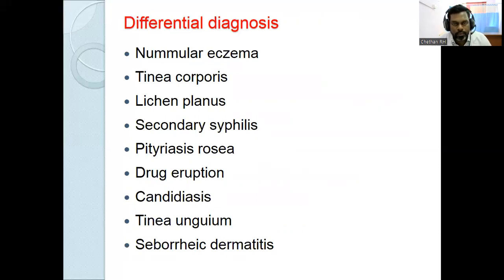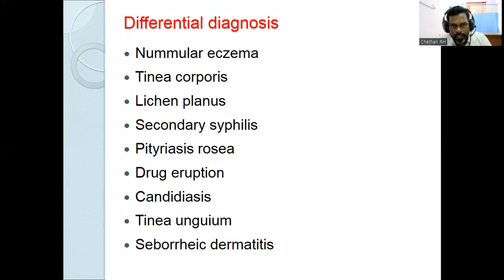Differential diagnoses include discoid eczema (nummular eczema) — presents as discoid hyperpigmented scaly plaques over extensor extremities with itching and oozing. Secondary infection is common in eczema and rare in psoriasis due to preserved antimicrobial peptides (beta-defensins and cathelicidins) in psoriasis. In eczema, these antimicrobial peptides are decreased, leading to higher chance of secondary infection.